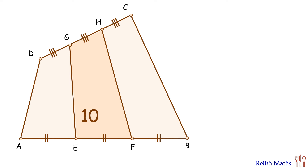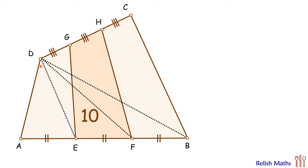Let's check the solution. We'll start by joining vertex D with points E, F, and B. In these three triangles, the bases are equal and they have a common vertex, so the height is equal, and thus these three areas are equal. We can say that the area of yellow triangle DFB equals one third the area of triangle ABD.